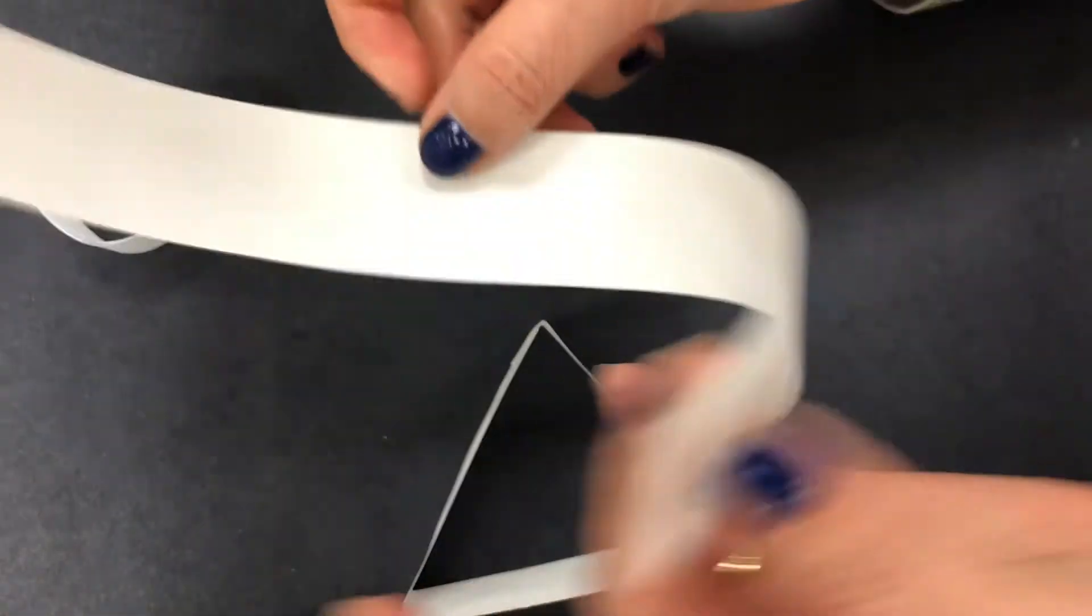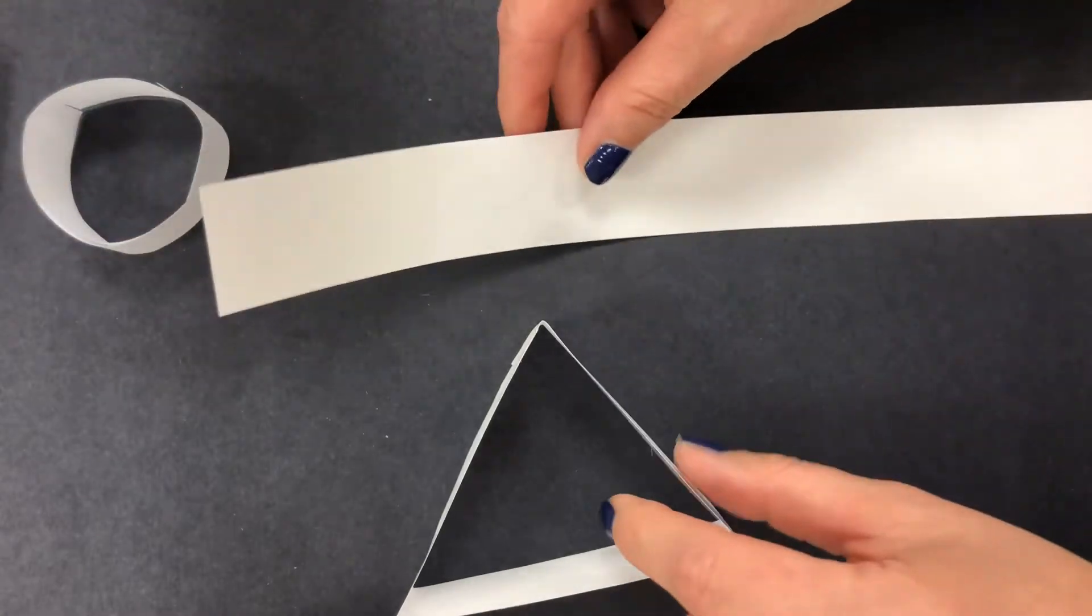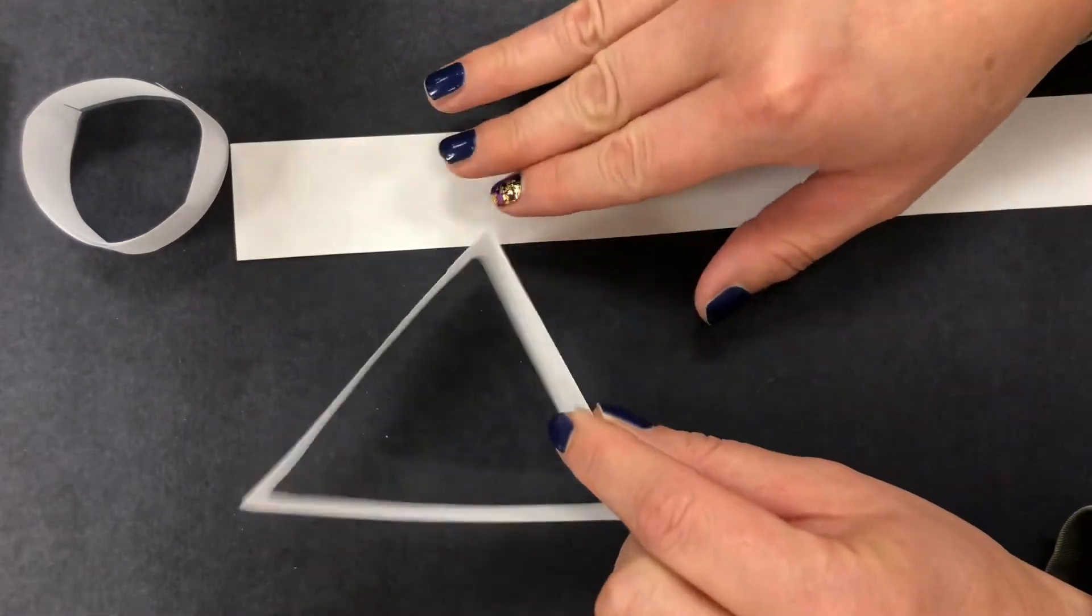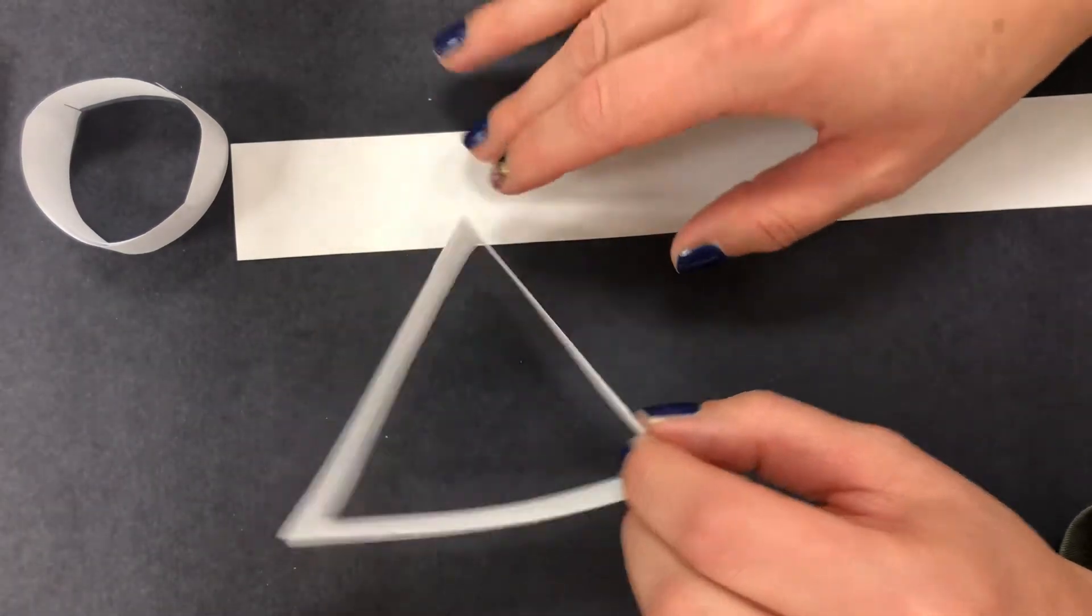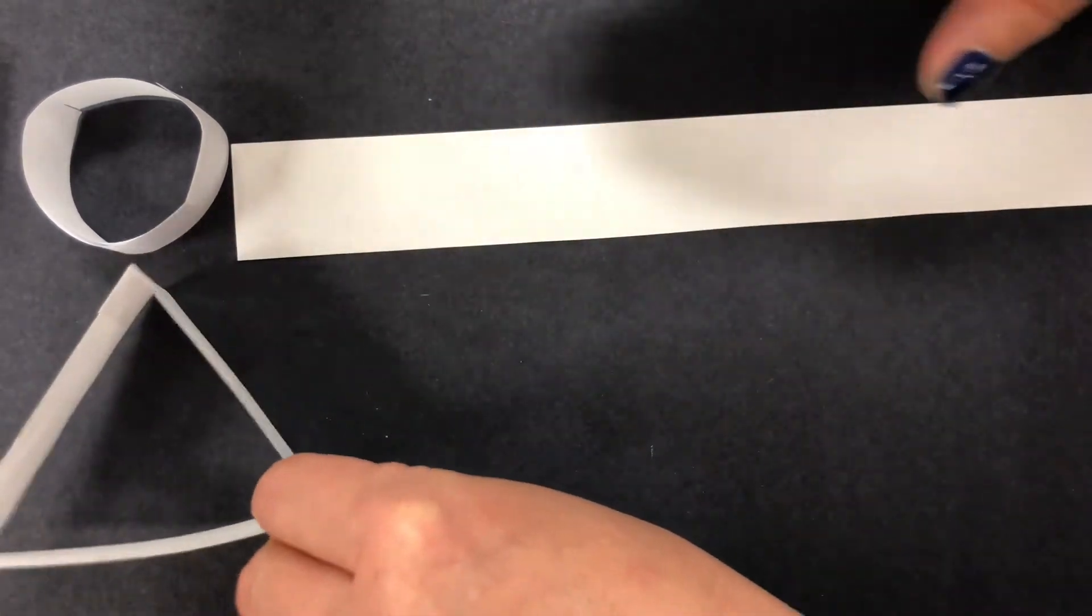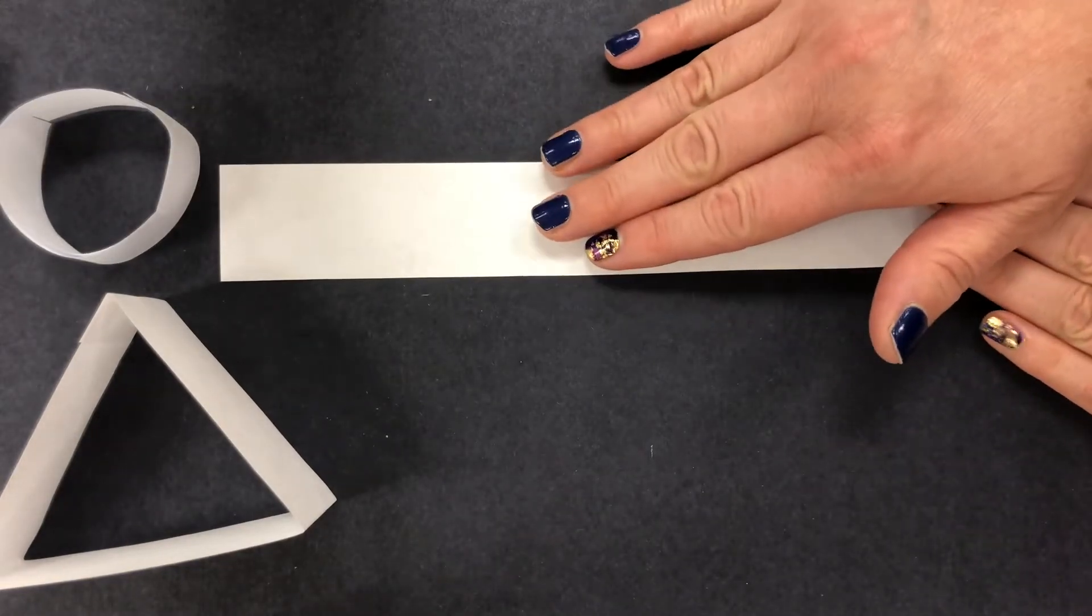We're going to do the same thing but this time we're going to take the strip of paper and create other geometric shapes like triangles, rectangles, and squares. So here's an example of a triangle and I'm going to show you how to make that one.